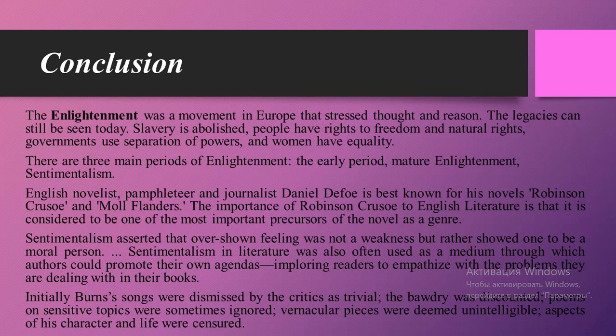English novelist, pamphleteer, and journalist Daniel Defoe is best known for his novels Robinson Crusoe and Moll Flanders. The importance of Robinson Crusoe to English literature is that it is considered one of the most important precursors of the novel as a genre. Sentimentalism asserted that showing feeling was not a weakness but rather showed one to be a moral person, and in literature it was often used as a medium through which authors could promote their own agendas, imploring readers to empathize with the problems dealt with in their books.